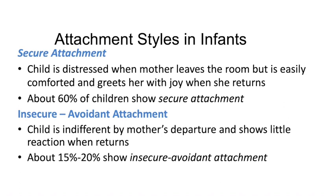These experiments showed that you can classify the bonds children have with their parents into three or four reliable categories. The first is the secure attachment type. In the strange situation, the child is distressed when the mother leaves the room, but is almost immediately soothed by her return and greets her with joy. About 60% of all children Mary Ainsworth tested showed this secure attachment type. Secure attachment turns out to be a protective resilience factor even later on in life as adults.